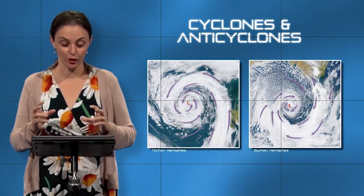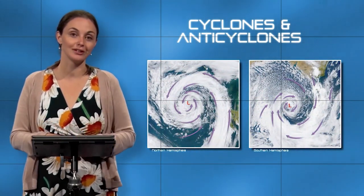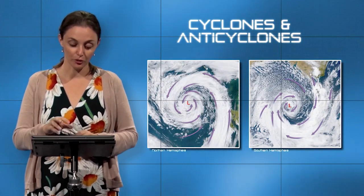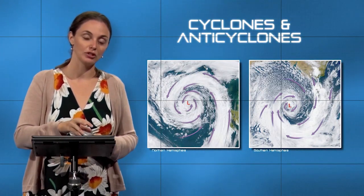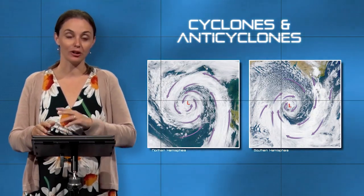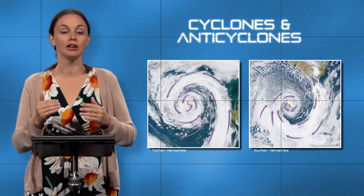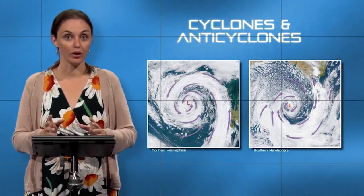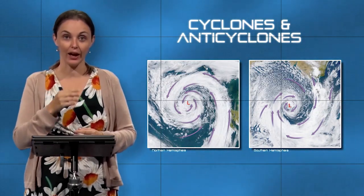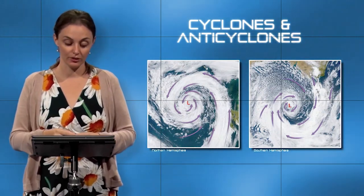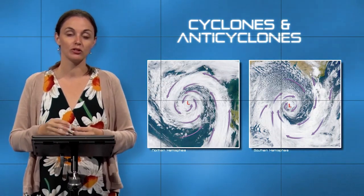Here are two satellite images of low-pressure systems — one in the northern hemisphere, one in the southern hemisphere. In the northern hemisphere example, cloud formation spirals into the center of the system counterclockwise — that's how you know it's in the northern hemisphere. Every hurricane and mid-latitude cyclone above the equator has counterclockwise winds. The southern hemisphere version shows the same system but with clockwise winds spiraling into the low-pressure center.